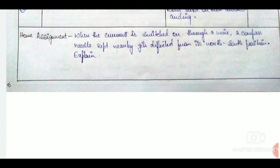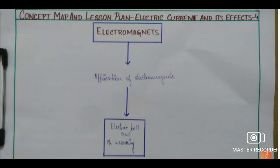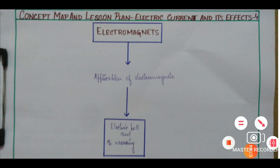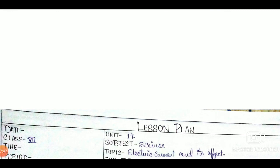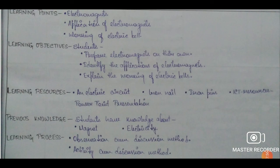With that our third lesson plan ends and we are here with our fourth lesson plan from the same chapter. This is going to be the last lesson plan of this chapter. We start with the concept map as usual. We again write the usual details like date, class, time, period, unit, subject, topic, and subtopic. Then we have the learning points, then learning objectives, then learning resources, then previous knowledge, and finally learning processes.